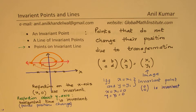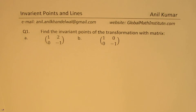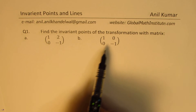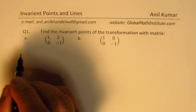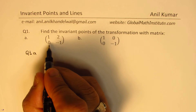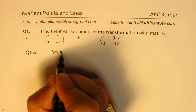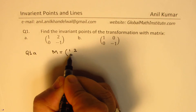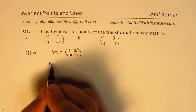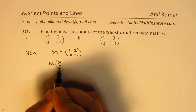Question 1A: find the invariant points of the transformation with matrix [1, 2; 0, −1]. So we have matrix M = [1, 2; 0, −1], and we need to find invariant points. Let's apply the transformation of this matrix to a general point (x, y).